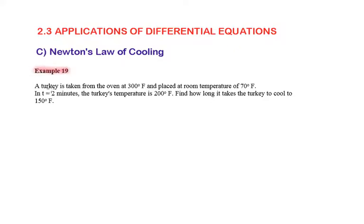Example 19. A turkey is taken from the oven at 300 Fahrenheit and placed at room temperature of 70 Fahrenheit. In 2 minutes, the turkey's temperature is 200 Fahrenheit. Find how long it takes the turkey to cool to 150 Fahrenheit.